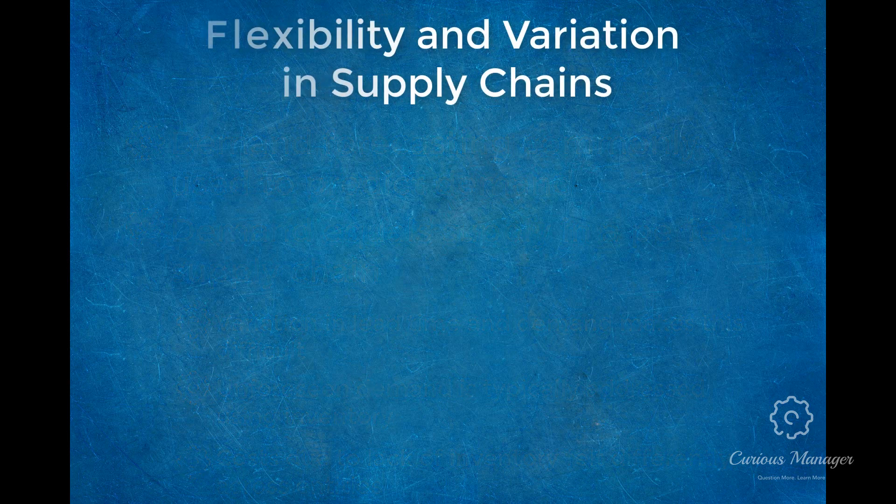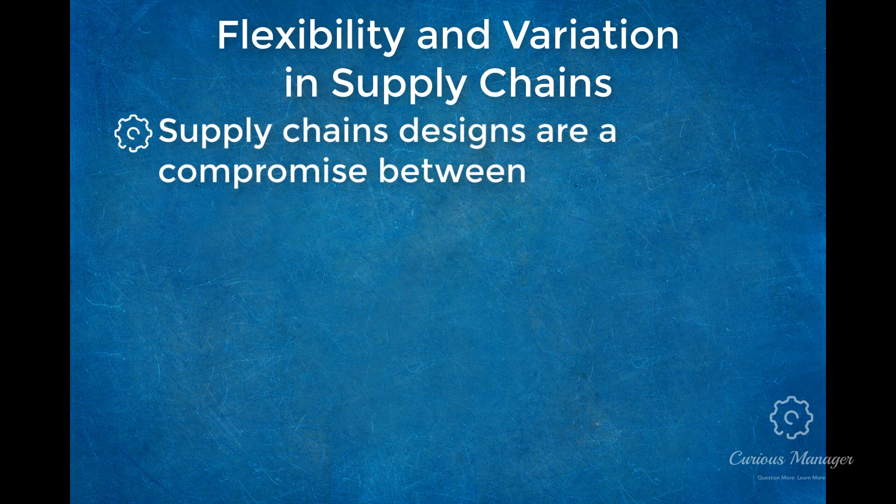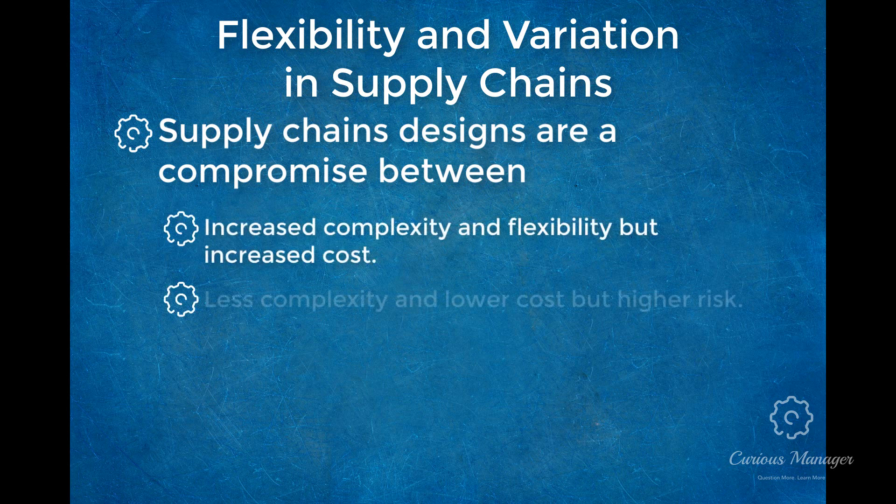Supply chains usually have to compromise between a complex and flexible supply chain with increased cost and a simple and rigid supply chain with lower costs. More complex supply chains are better able to absorb variation. For example, having multiple distribution links can allow for products to be rerouted effectively in the event of a weather-related event, but this will increase costs, in some cases significantly. Simpler supply chains with fewer nodes typically cost less but are less capable of absorbing supply chain variation.